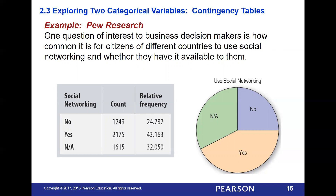In this particular case, we're moving on to a new example about whether people used social networking — yes, no, or they did not have access to it. This was done from a bunch of different countries, and they lumped it all together: 32,000 people who did not have access, 43,000 people who used social media, and 24,000 that did not use social media. So yes or no is the count, and then this is the percentage — the relative frequency.